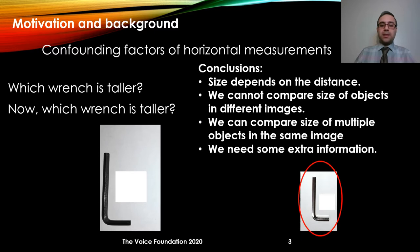Based on this small experiment, we could say that size in the image always depends on the working distance. So working distance is a confounding factor of horizontal measurement. Also, we cannot compare size of objects from different images, but we can compare size of multiple objects in the same image. And if we want to compare size of objects from different images, we need some extra information.